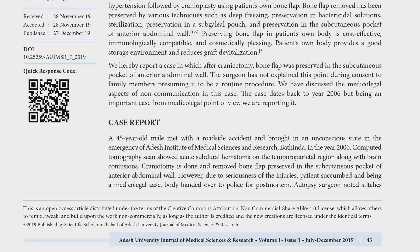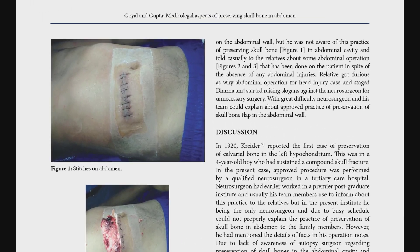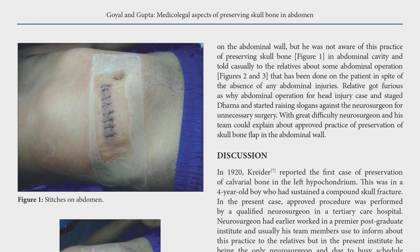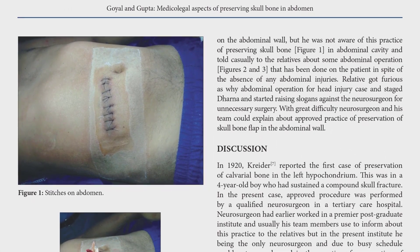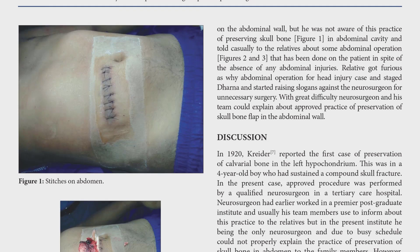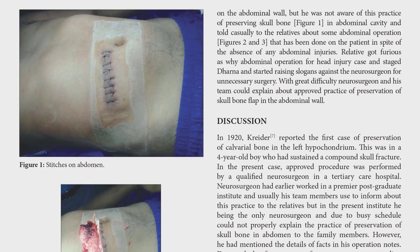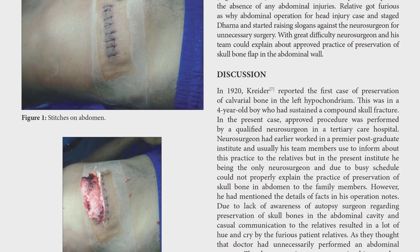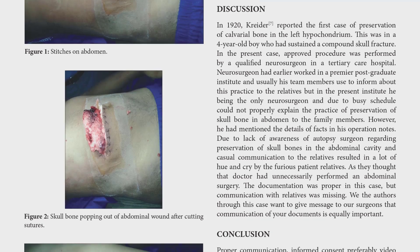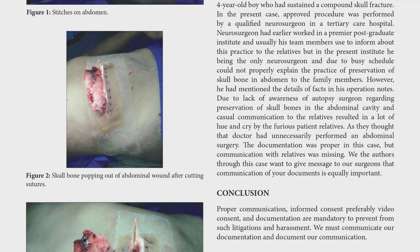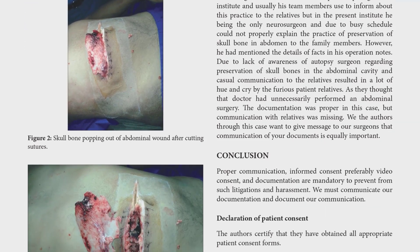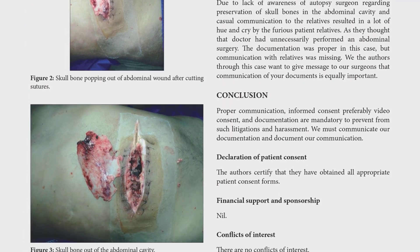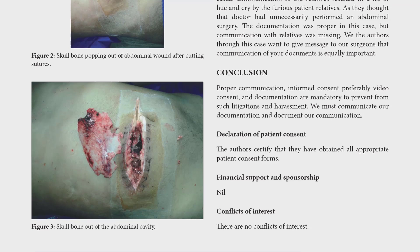But unusual things happened in this case. See, these are sutures on the abdomen. Then in the next photograph, the sutures were removed and the piece of skull bone is emerging out. And in the third photograph, the complete skull bone is out.